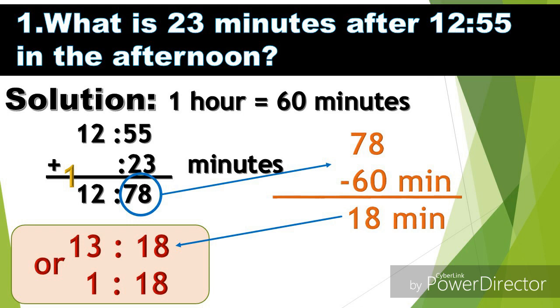So since 78, yun hanggang 60 minutes lang tayo, so ang gagawin natin maminus muna natin yung 60 minutes. 78 minus 60 is 18 minutes. So yung 60 minutes na yan i-carry natin doon sa taas ng 12. Since 60 is equivalent to 1 hour, so 1 hour plus 12 hours is equal to 13. Therefore we have 13 hours and 18 minutes, or it is equivalent to 1:18.